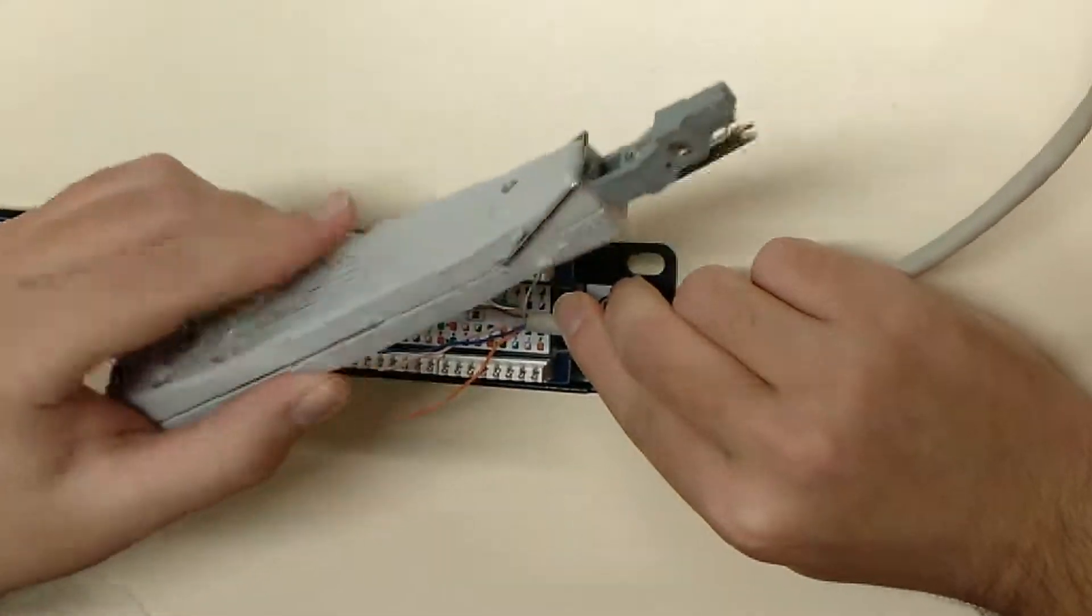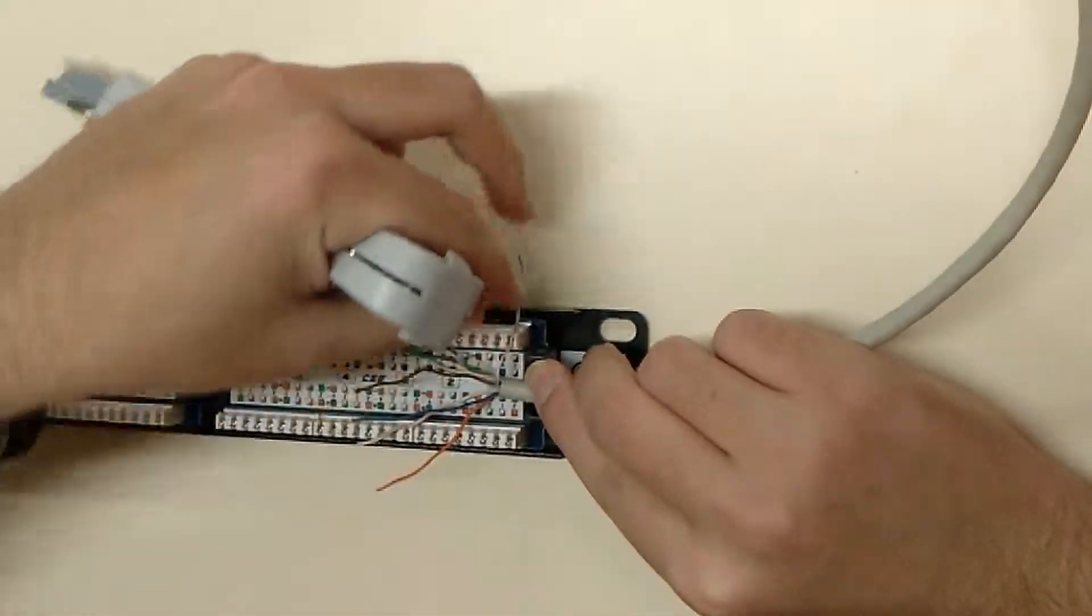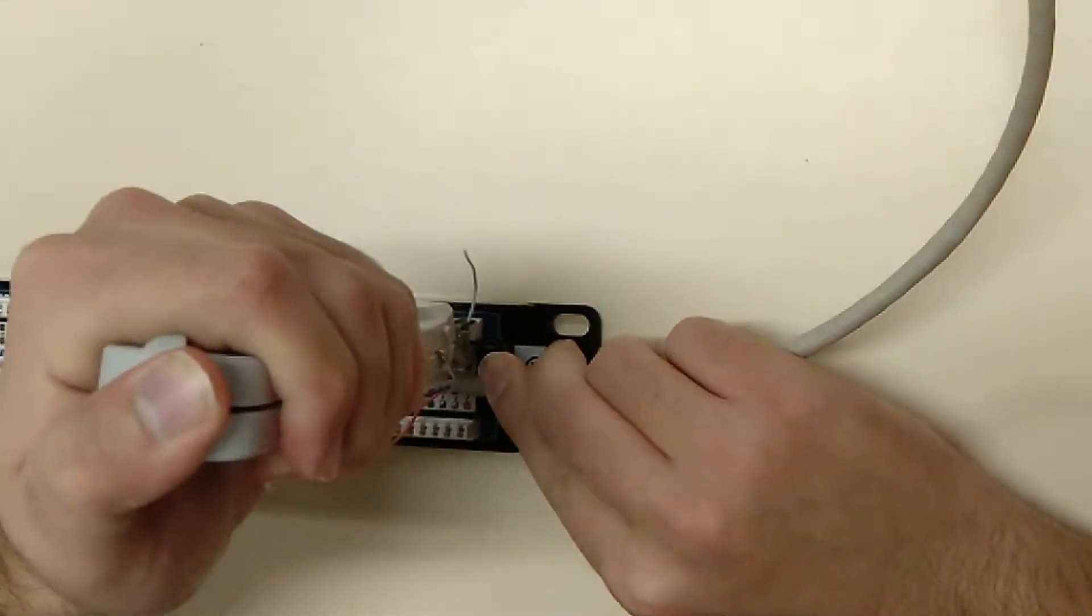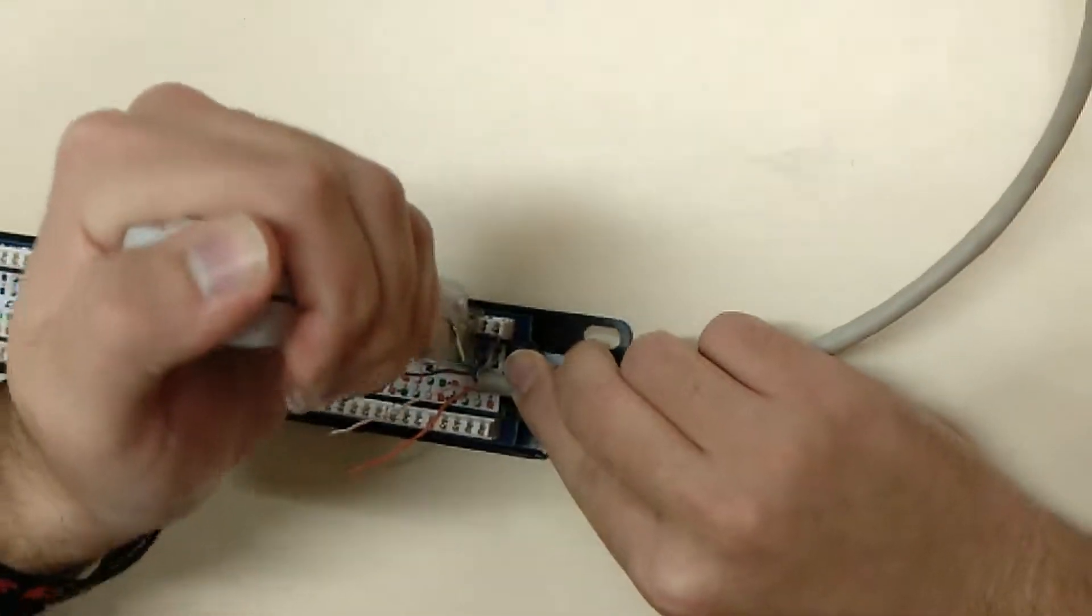Then we will impact the cables one by one in the patch panel in order. On the top we will put brown, white brown, blue and white blue. And on the other side, orange, white orange, green and white green.